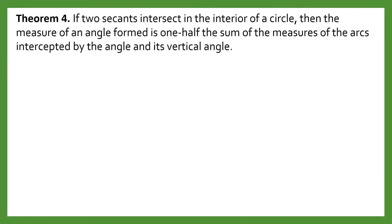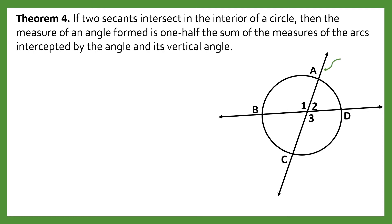Then we have Theorem number 4. If two secants intersect in the interior of a circle, then the measure of an angle formed is one half the sum of the measures of the arcs intercepted by the angle and its vertical angle. Here in the figure, there are two secants intersecting inside the circle forming four angles. The angle formed is one half the sum of the arcs intercepted by the angle and its vertical angle.